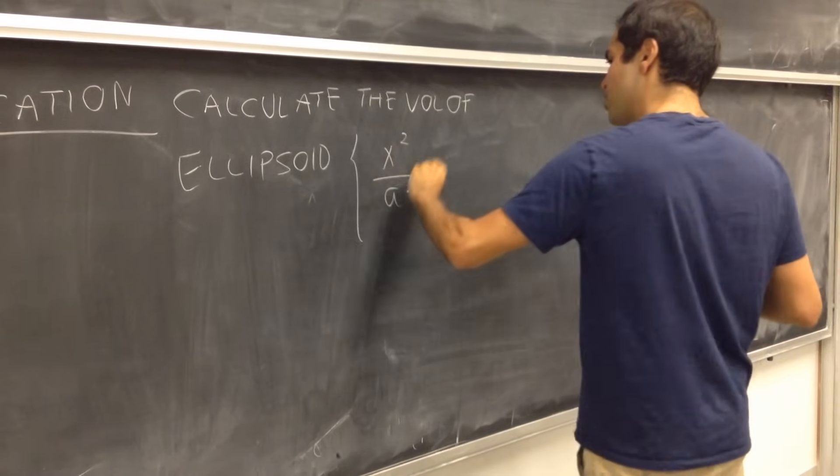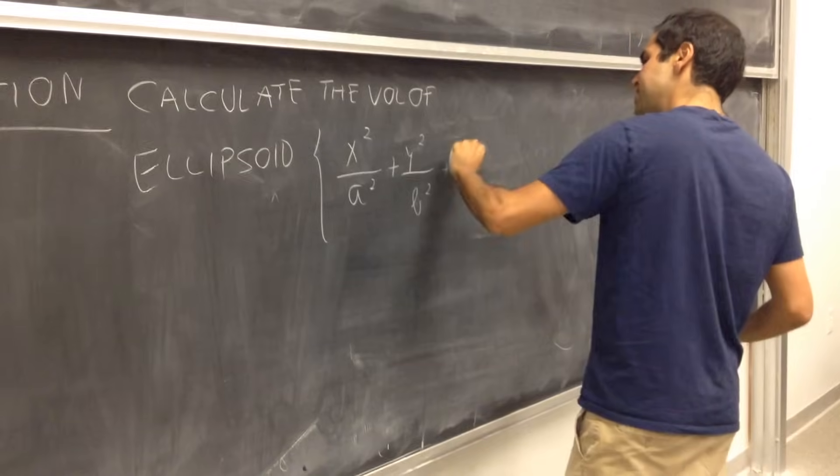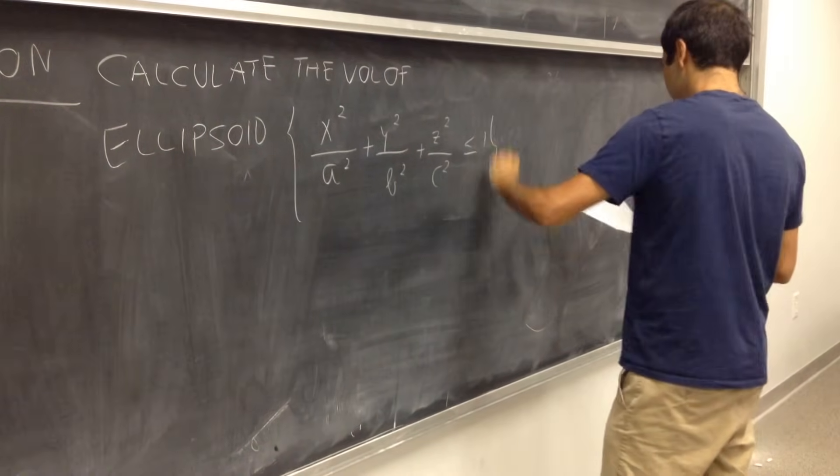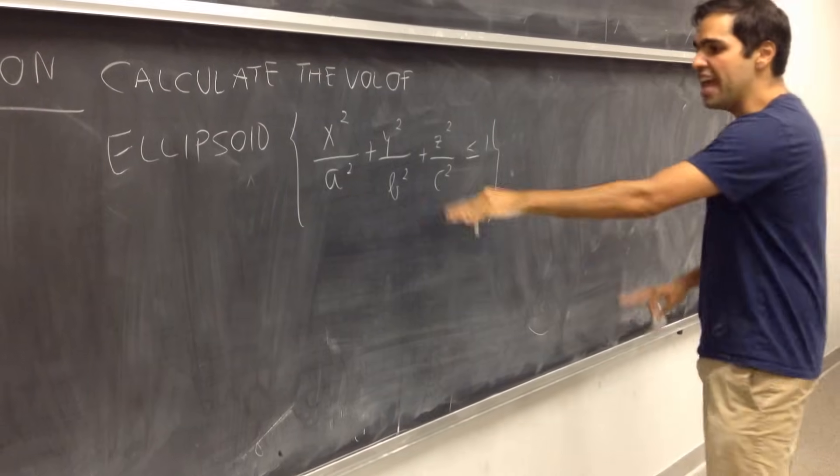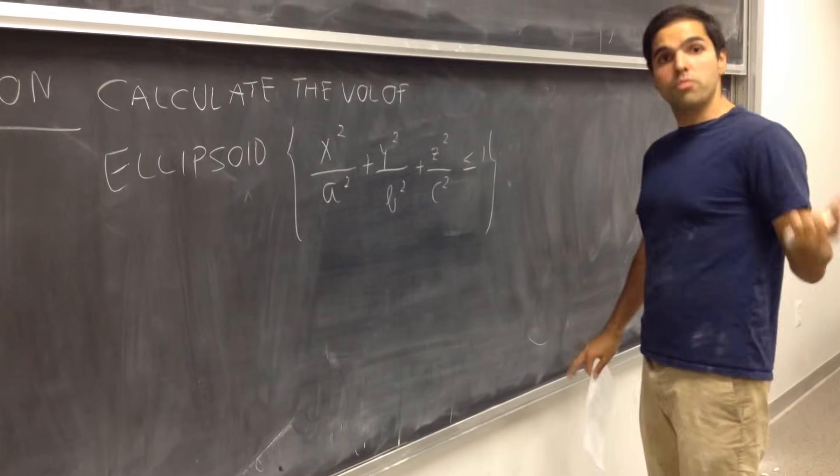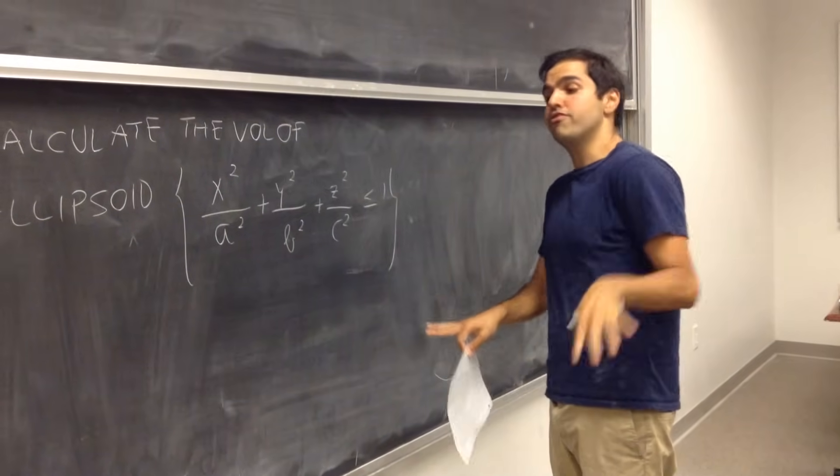calculate the volume of the ellipsoid in R3, x squared over a squared, plus y squared over b squared, plus z squared over c squared, less than or equal to 1. Okay, where again, a, b, and c are positive numbers, and if you took multivariable calculus, you might have PTSD from that, because